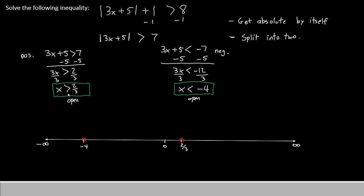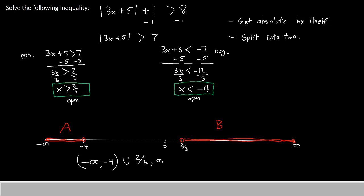The inequality that says 2 thirds says greater than, so our answer will be only the numbers greater than 2 thirds. Our second inequality says less than negative 4, so we will also have the numbers less than negative 4, which means we have two regions in our answer. The region in the middle will not be part of the answer. So the first part of our answer will be negative infinity to negative 4, union 2 thirds to infinity. As a warning, greater than will generally give us two regions in our answer.